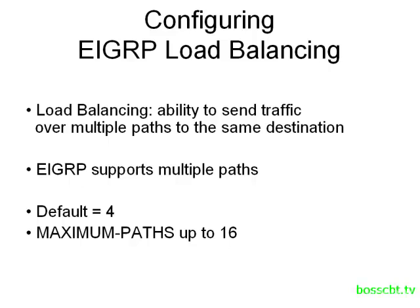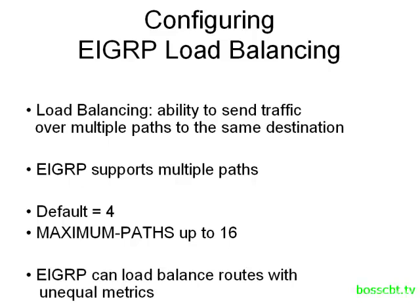There are a lot of similarities between these two protocols with load balancing, however there's one major difference. EIGRP can not only load balance equal cost paths, it can also load balance routes with unequal metrics. OSPF was limited to equal cost load balancing — in other words, two routes have to have the same cost in order for OSPF to balance traffic between them.